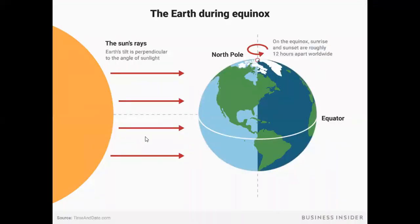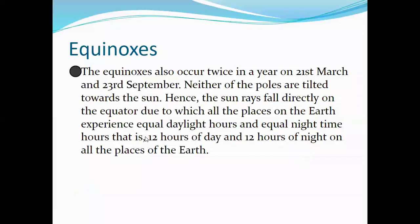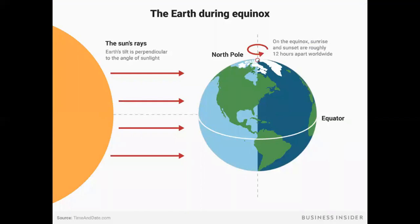As you can see in this diagram, the sun rays fall directly on the equator. Due to this, all places on the earth experience equal daylight hours and equal night time hours — that is, 12 hours of day and 12 hours of night at all places on the earth.